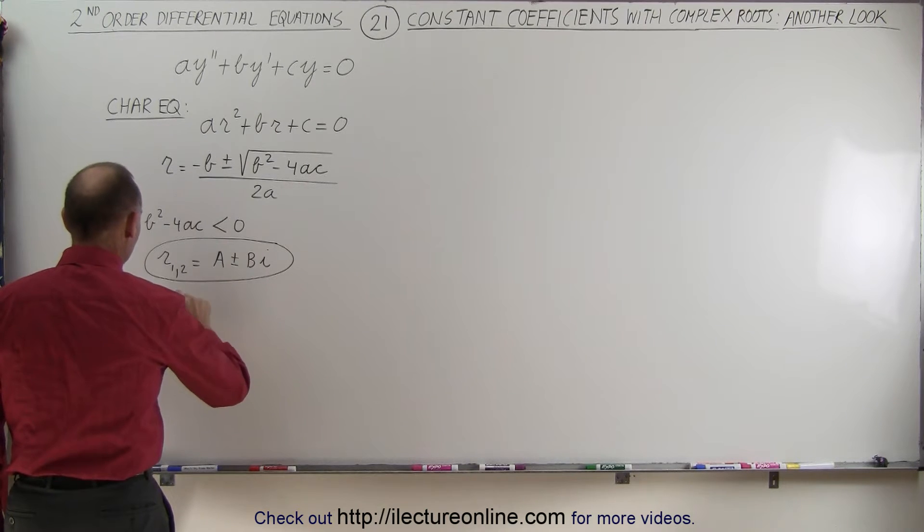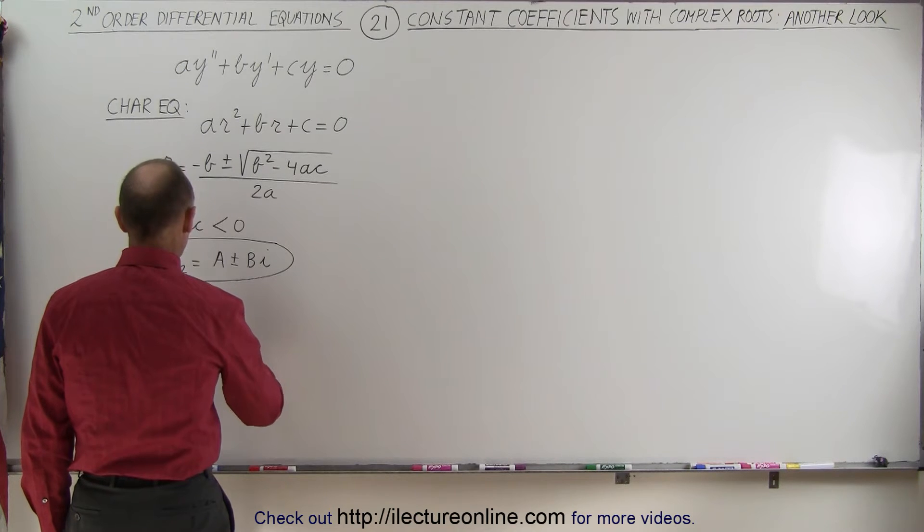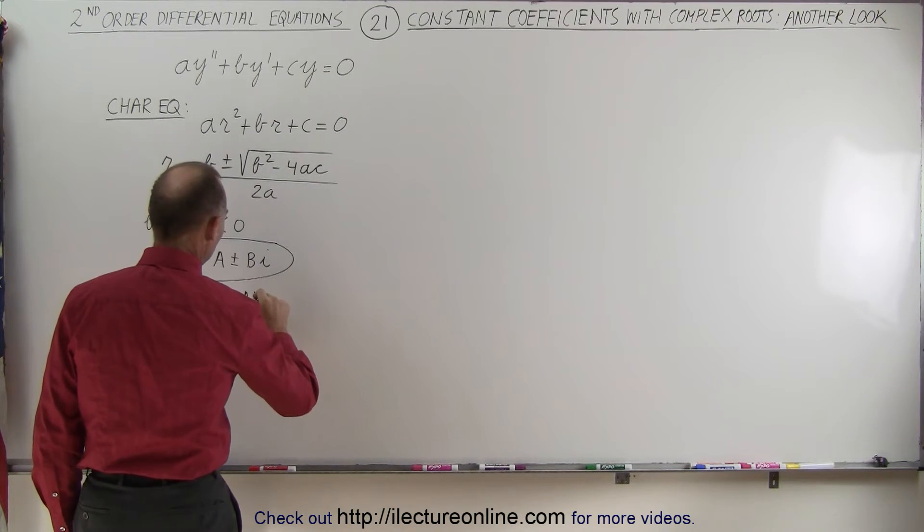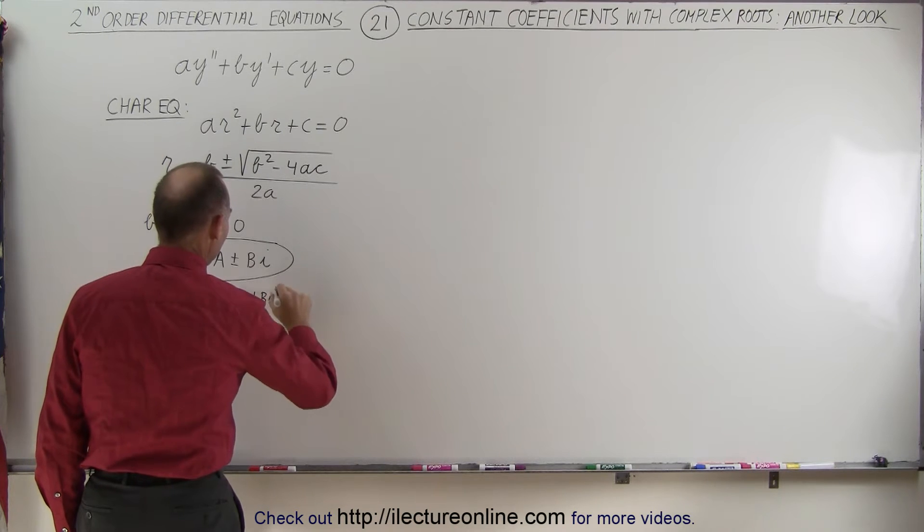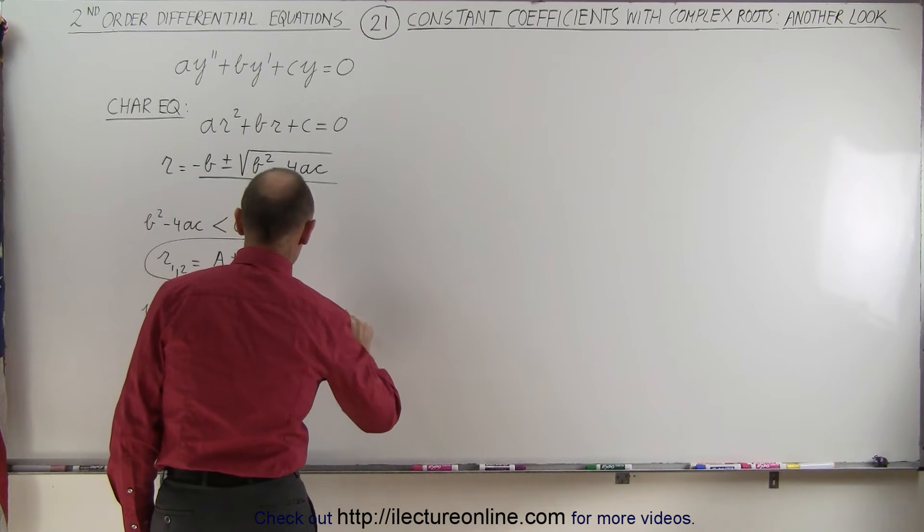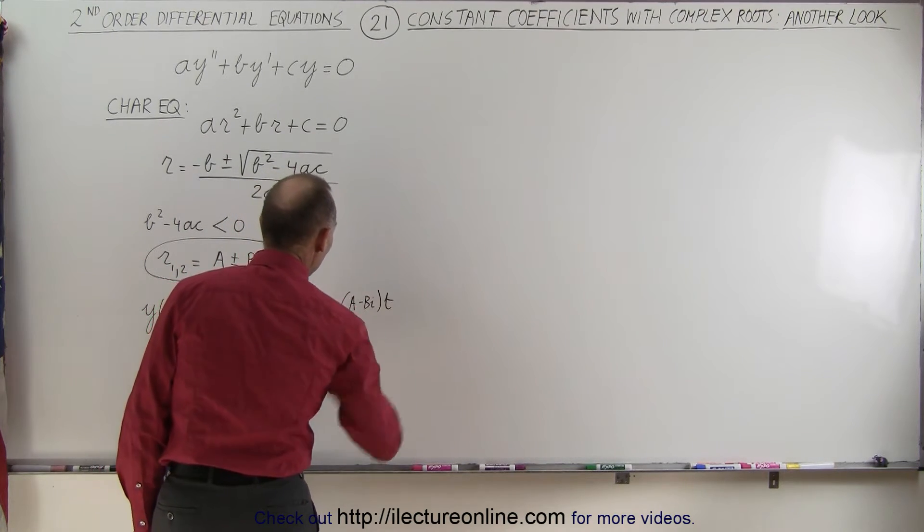So y as a function of time is equal to c1e to the a plus bi times t plus c2e to the a minus bi times t.